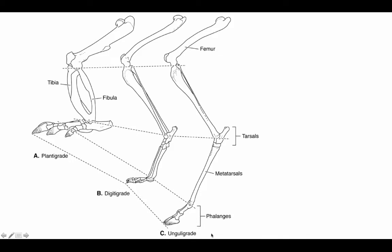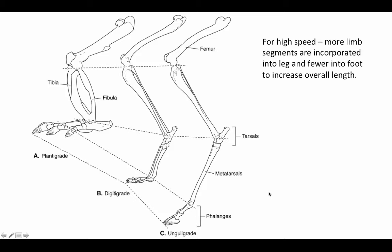In the unguligrade posture — obviously taken by ungulates, hoofed mammals such as horses and antelopes — the phalanges are also incorporated into the functional leg. It is just the highly modified claw or fingernail, the hoof, that is the functional foot in contact with the ground. This is like the professional ballerina en pointe position. For high speed, more limb segments are incorporated into the functional leg and fewer into the functional foot, increasing overall leg length and thus stride length.